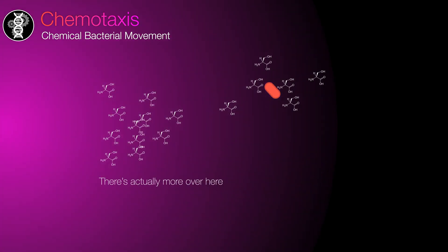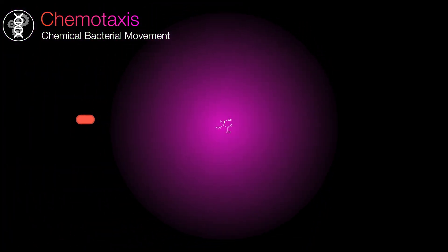Bacteria experience thermal noise and local noise that can interfere with their chemotaxis abilities. To solve this, bacteria move by running in straight lines and tumbling in short, sporadic bursts.